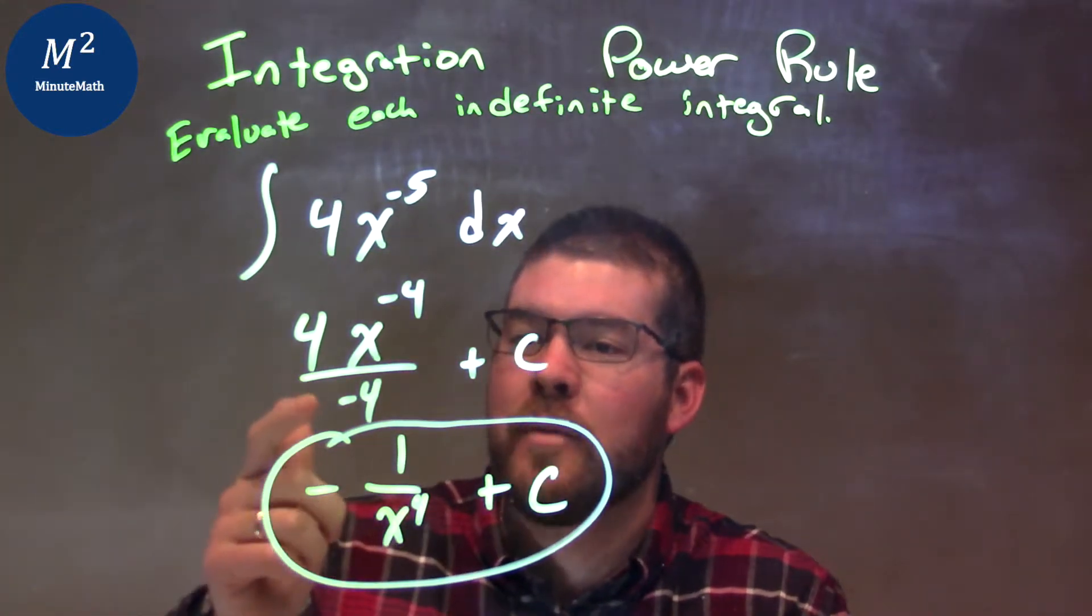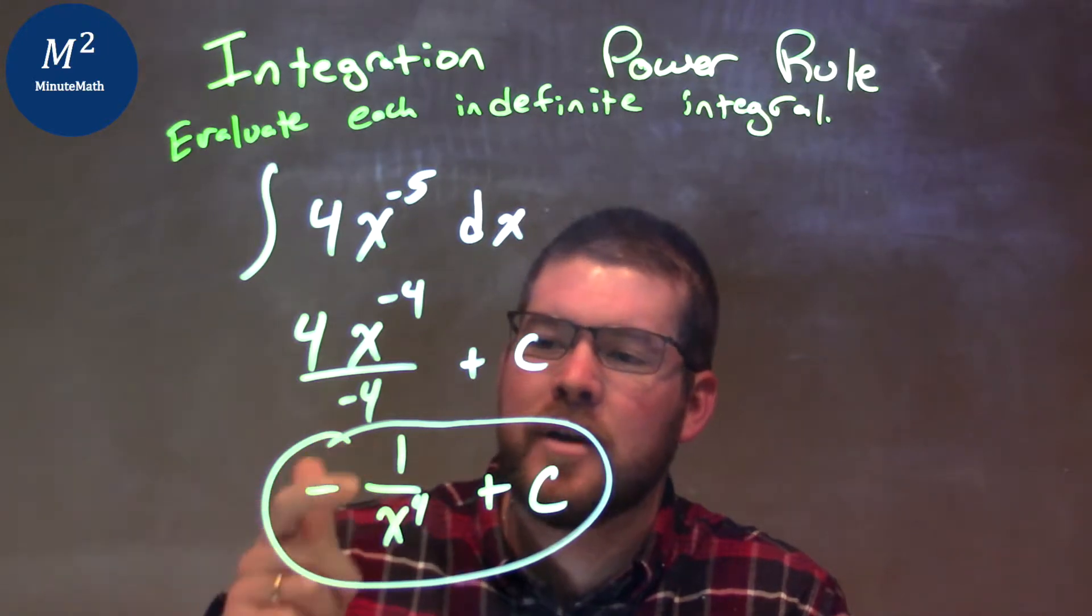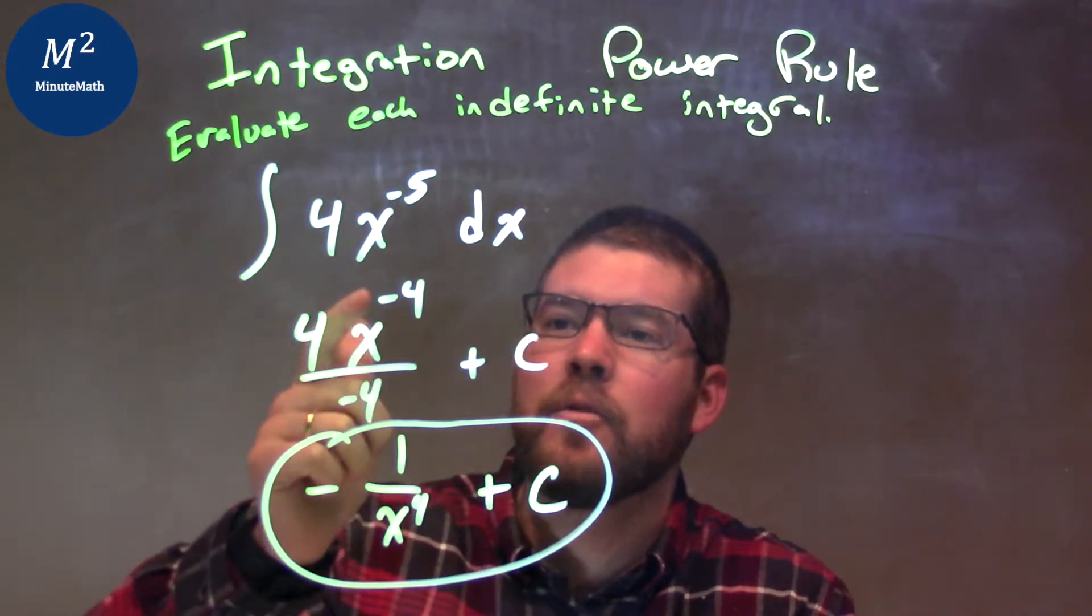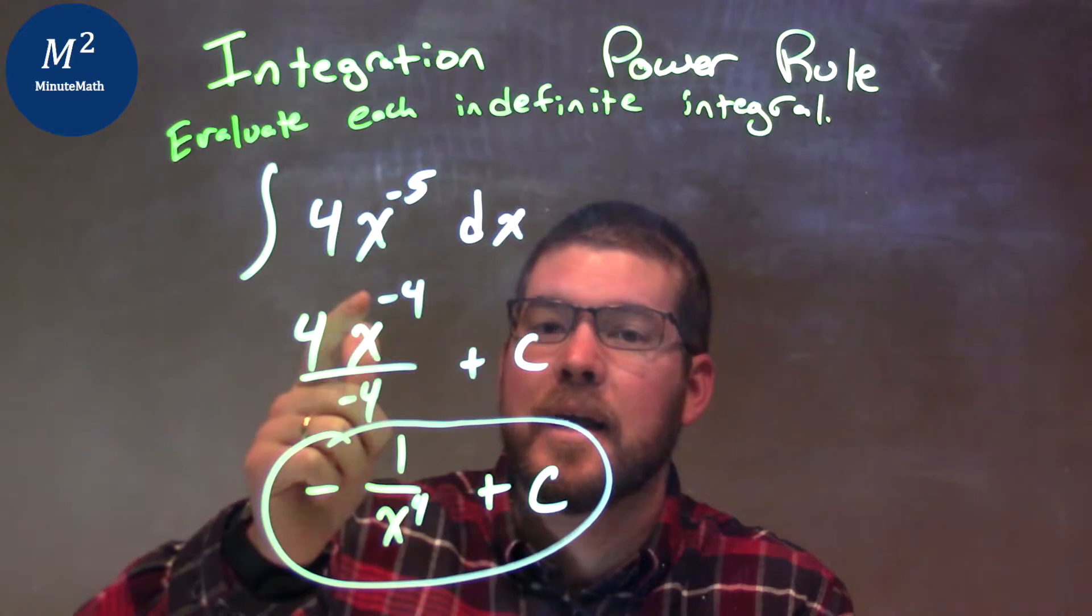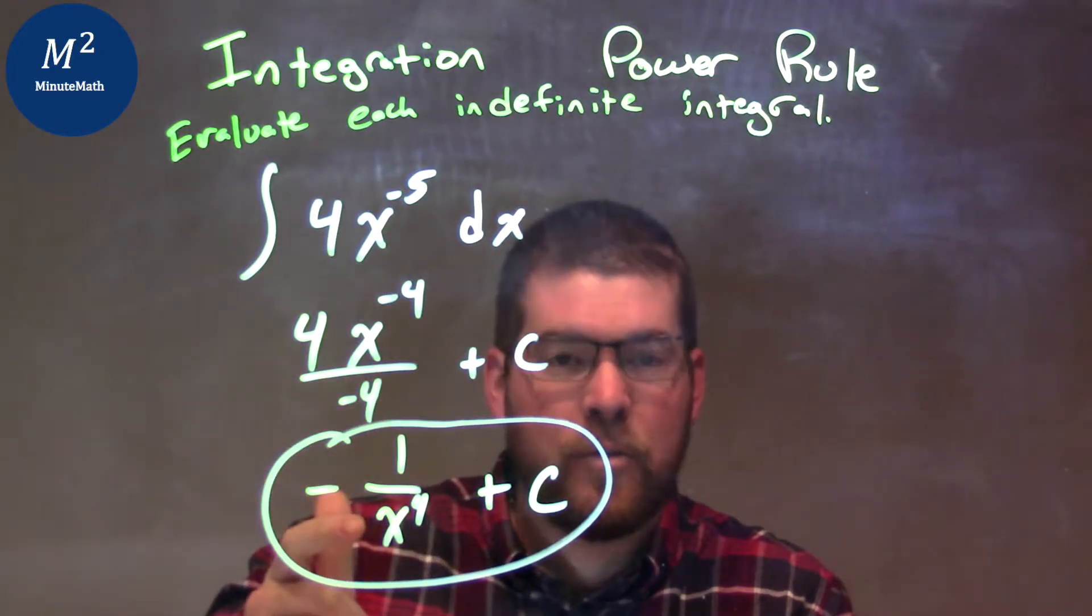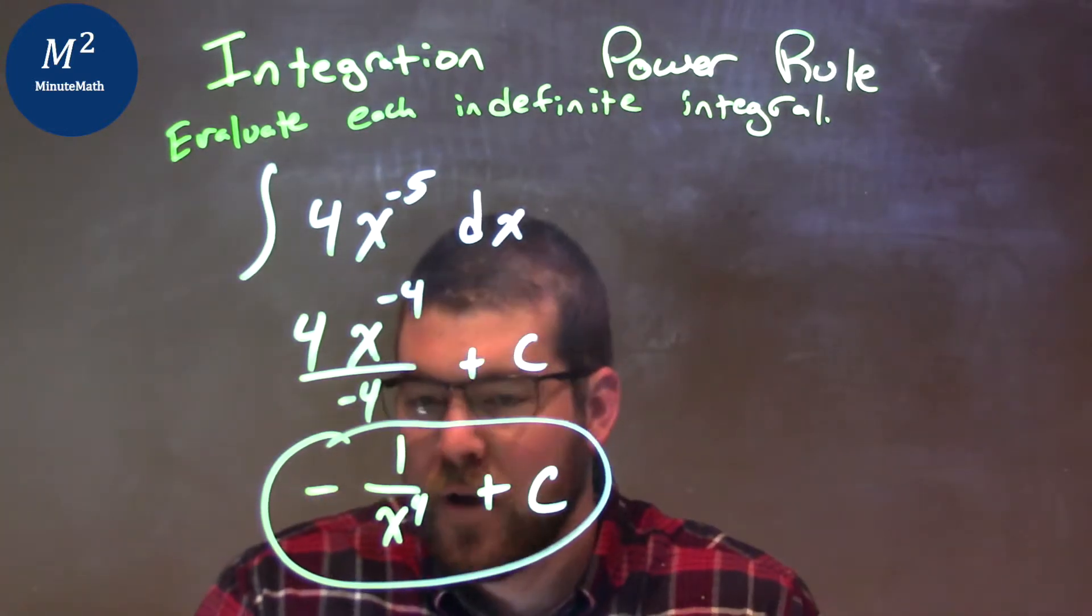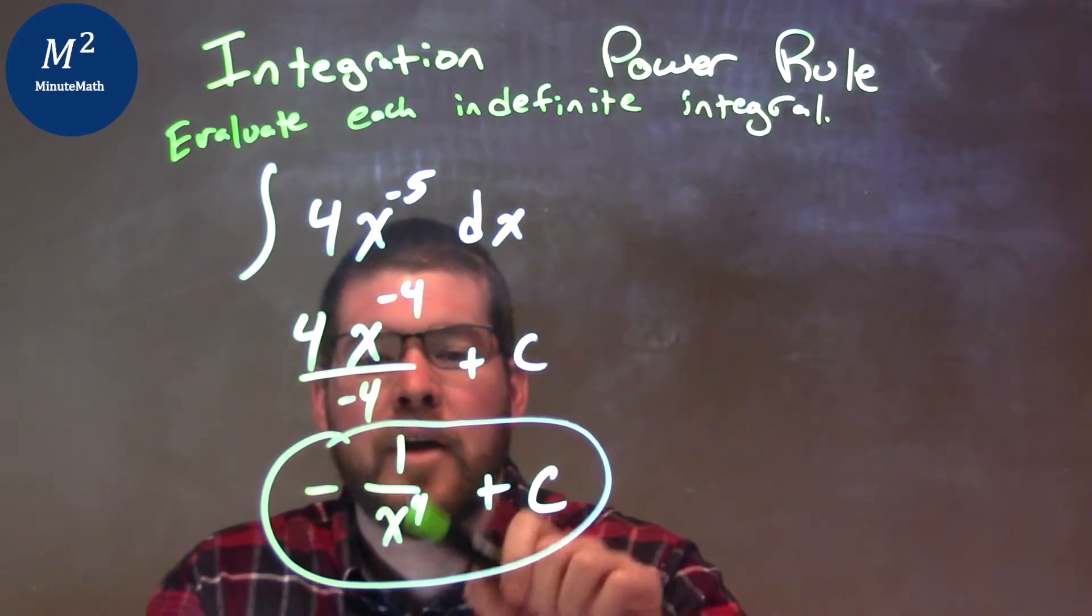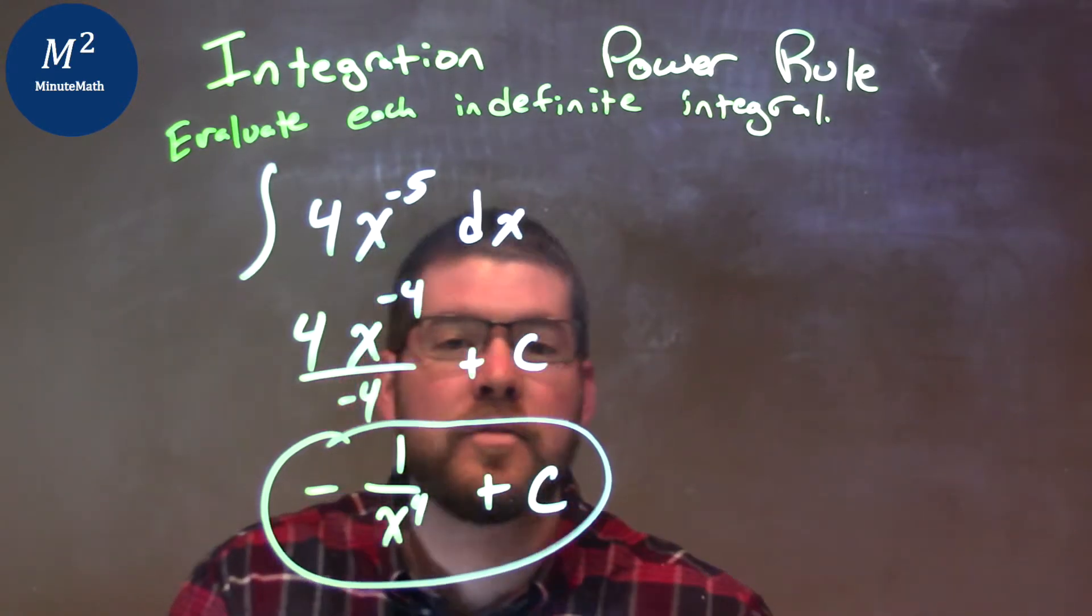Now we simplify. 4 divided by negative 4 is negative 1. But x to the negative 4th power, that negative 4th power can come down to the denominator being a positive 4th power. So we have our final answer again of negative 1 over x to the positive 4th power plus c.